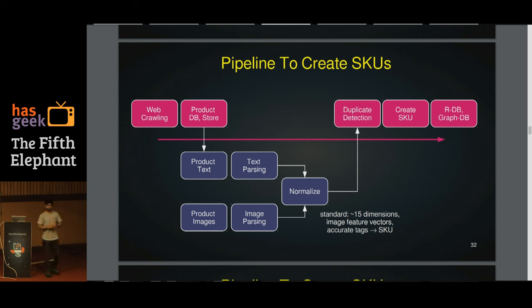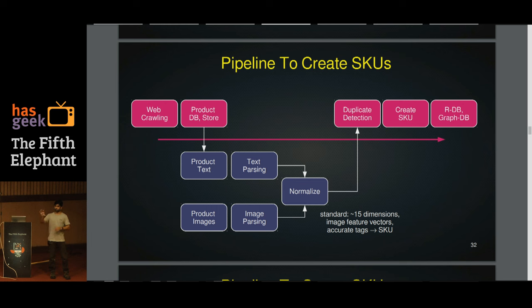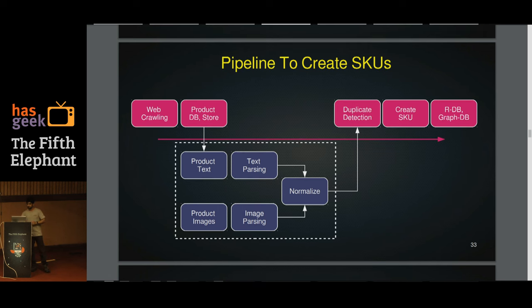Here is the pipeline we have at our company for creating SKUs. We take data from different commerce portals and put it into a staging database. A product page has text and images — text includes title and description, and images can be front, back, or side. We deeply parse this text and image data and normalize them into 15 dimensions, which act as our standard. We also compute feature vectors for the primary photos. After doing this, we have accurate tags, create SKUs, and only if a product is found to be unique do we put it into our production database.